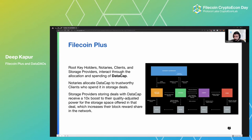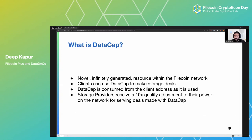Let's define data cap and make sense of why it's interesting. Data cap is a novel programmatically generated resource within the Filecoin network. Clients and data owners use data cap to make storage deals — it's a one-time use credit, consumed as it is used in those deals. Storage providers receive a 10x quality adjustment to power for serving deals made with data cap.